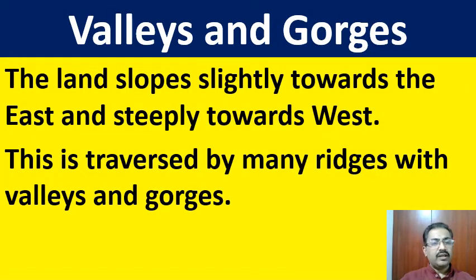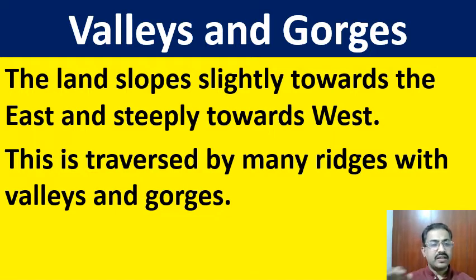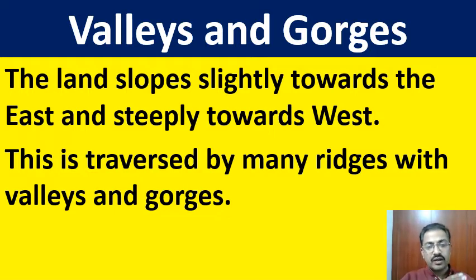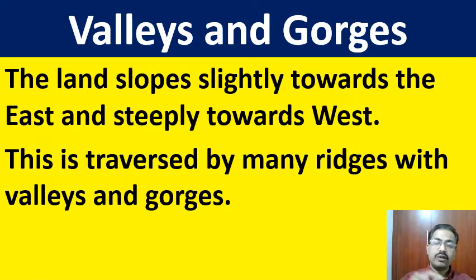Karnataka has many valleys and gorges. The land of Karnataka slightly slopes towards the east and steeply continues towards the west. The land table of Karnataka slopes towards the east. Therefore, most of the rivers which originate in the western side of the Western Ghats flow towards the east - rivers like Kaveri, Krishna, and many other tributaries. This region is also traversed by many ridges with valleys and gorges.